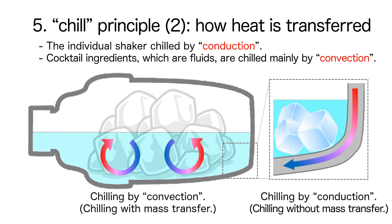Shakers made of metal or glass, which are solid, are chilled by conduction, which does not involve the movement of matter. Cocktail ingredients, which are liquids, are chilled by convection, which involves the movement of matter. Being aware of this difference in heat transfer is very useful in achieving one of the objectives of the shake: to chill.